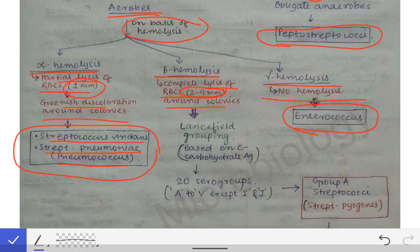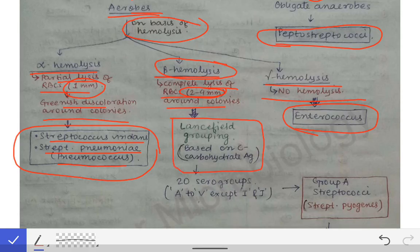The beta hemolytic streptococci were further classified — this is the most extensive group. That is why there have been many classification systems for this group. In beta hemolysis, first we have the Lancefield grouping, named after the scientist who developed it. This is based on the C-carbohydrate antigen on the cell wall of the bacteria. A mnemonic to remember: Lancefield → C-carbohydrate → cell wall — all start with C.